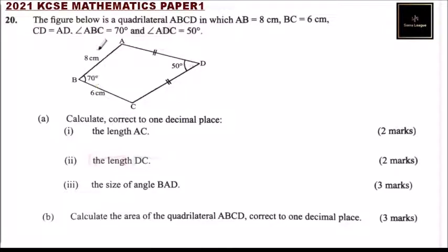Question number 20. The figure below is a quadrilateral ABCD in which AB is 8 cm, BC is 6 cm, CD equals AD, angle ABC is 70 degrees and angle ADC is 50 degrees. We can see these two sides are equal, so we can draw a line here to come there. Because now this becomes an isosceles triangle.